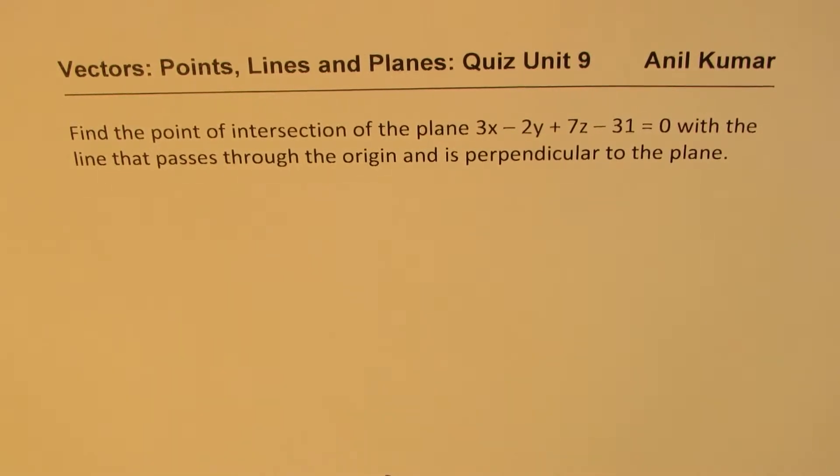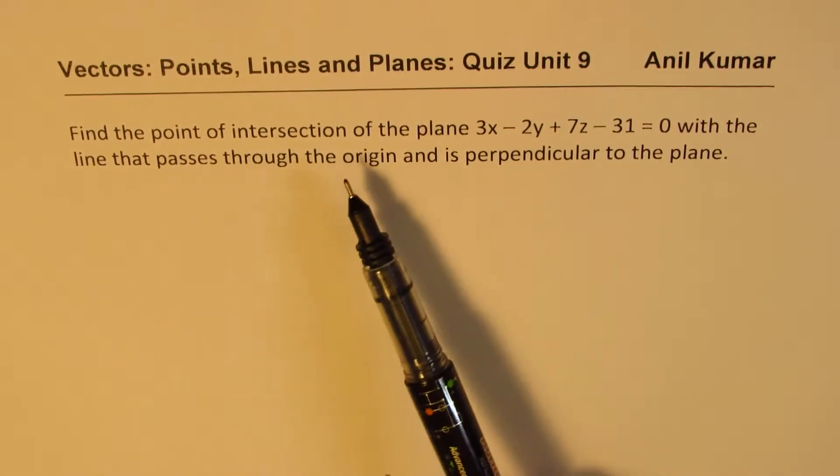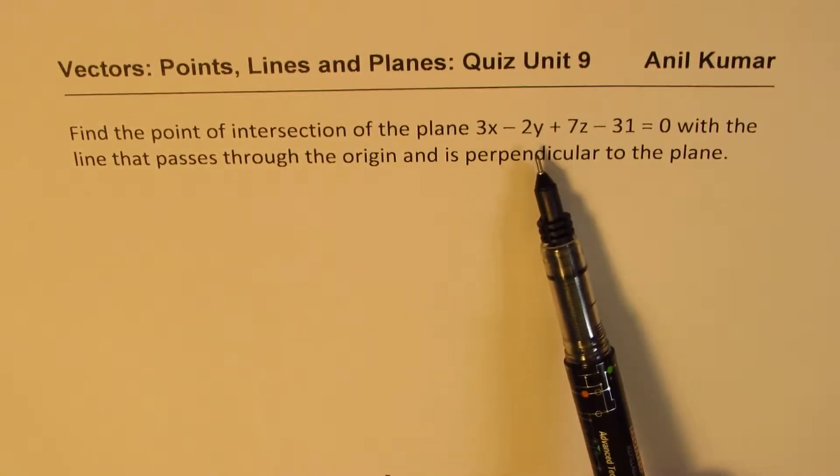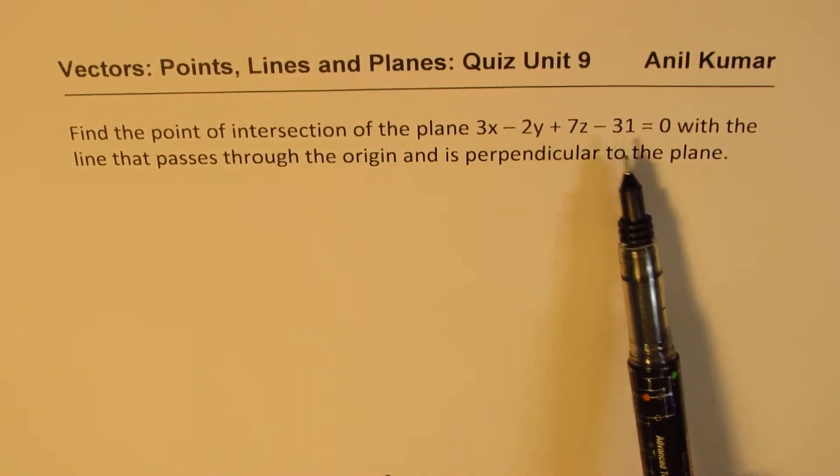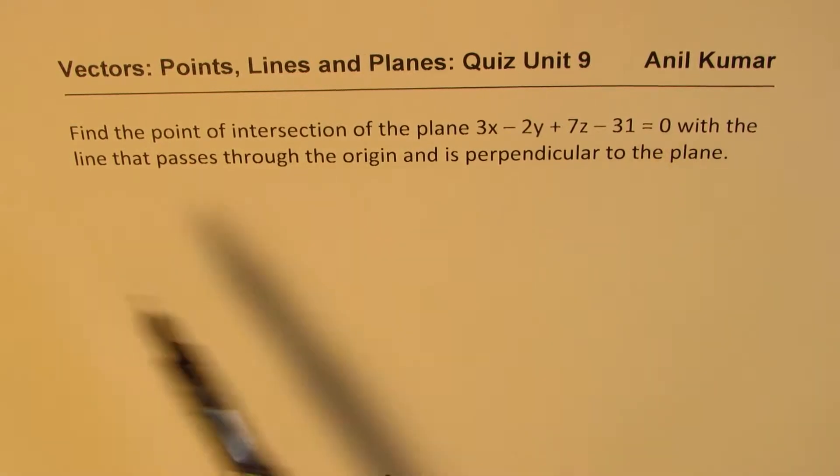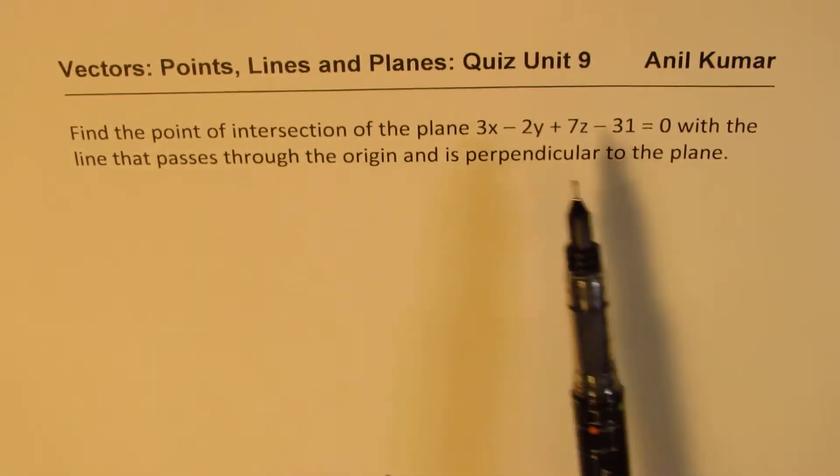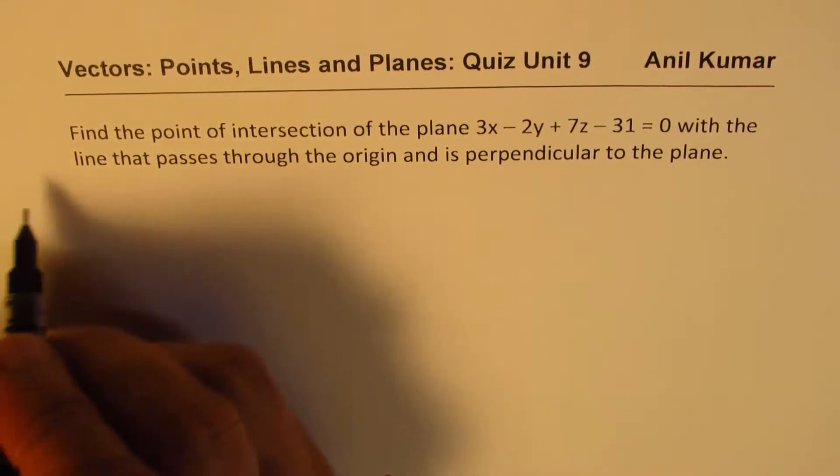The question here is, find the point of intersection of the plane 3x minus 2y plus 7z minus 31 equals to 0 with the line that passes through origin and is perpendicular to the plane.